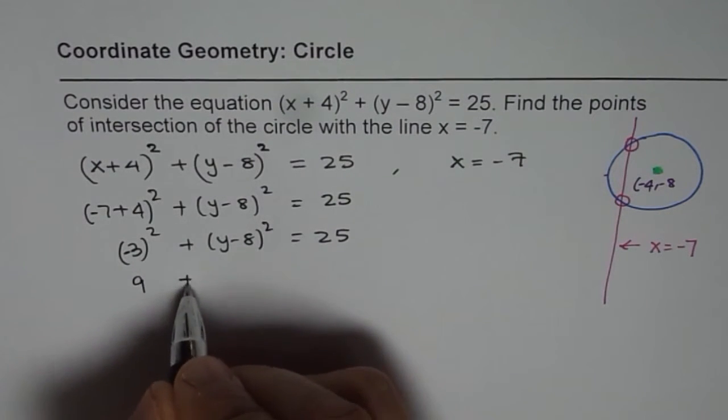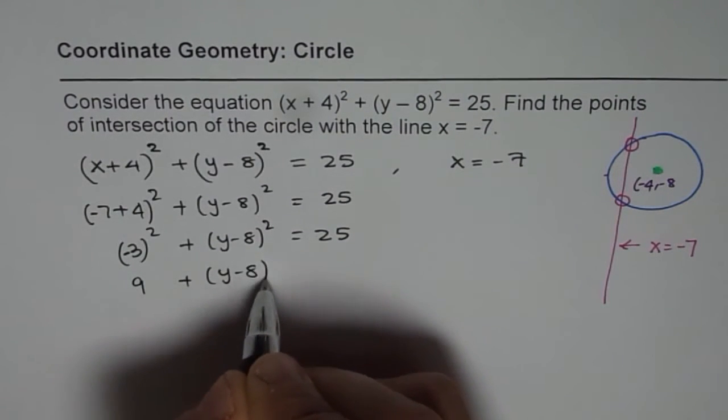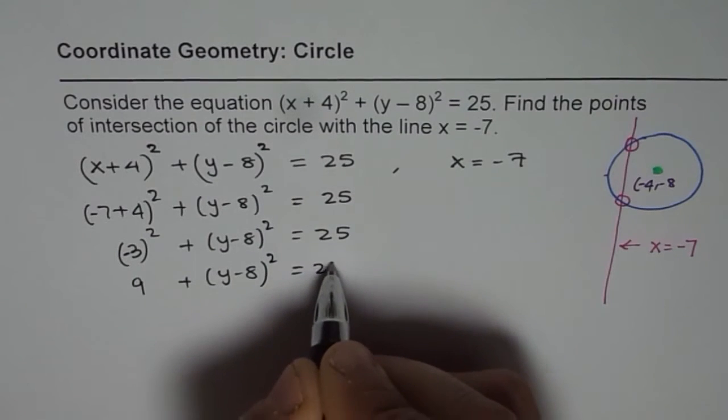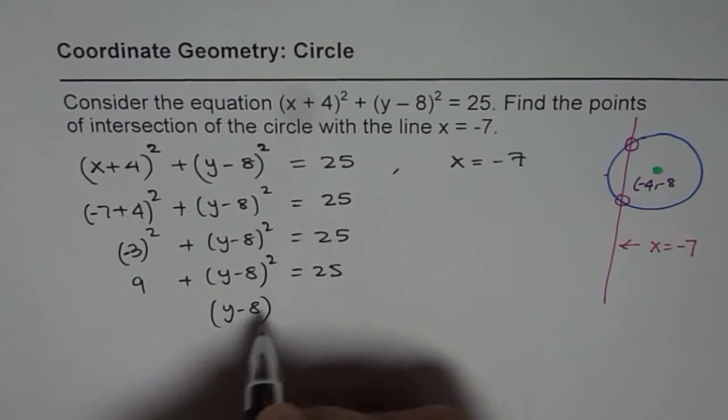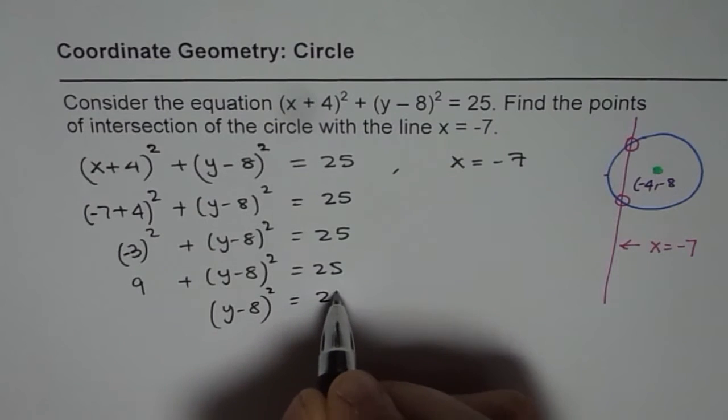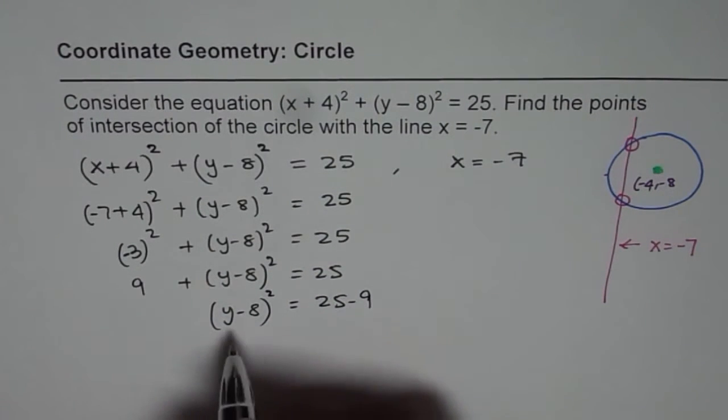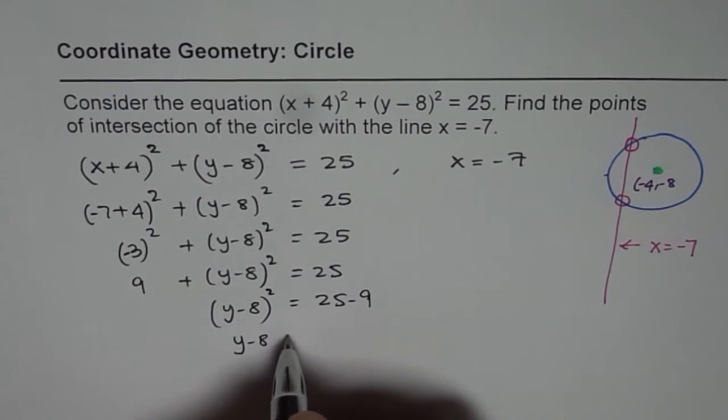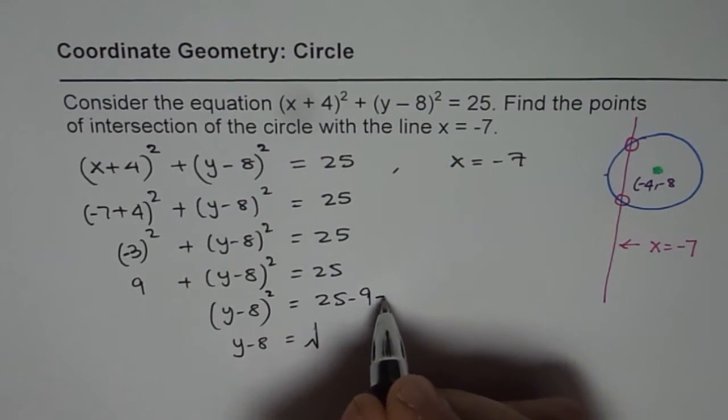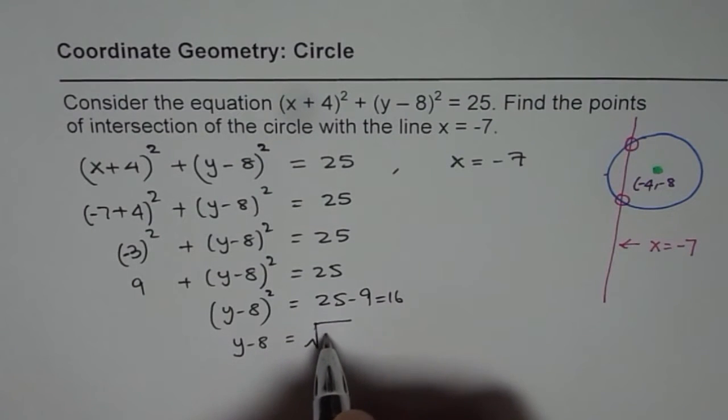This gives us 9 + (y - 8)² = 25. So (y - 8)² = 25 - 9 = 16. Therefore, y - 8 = ±√16, which is the square root of 16.